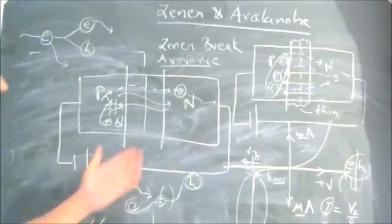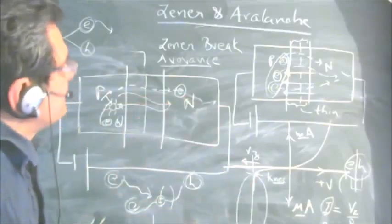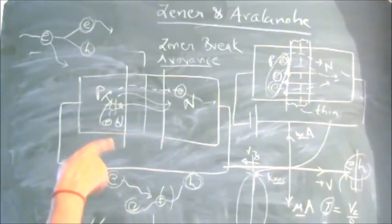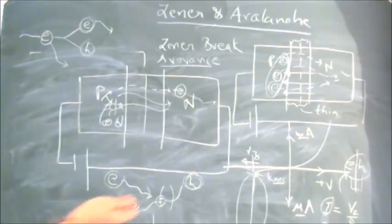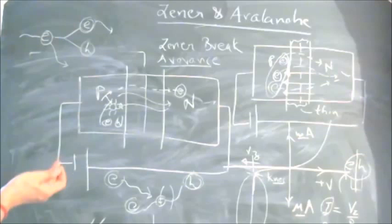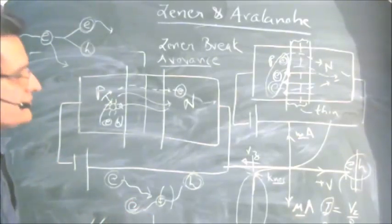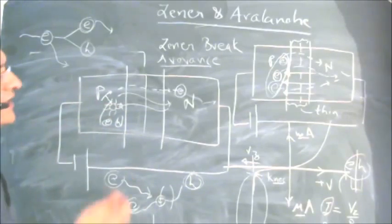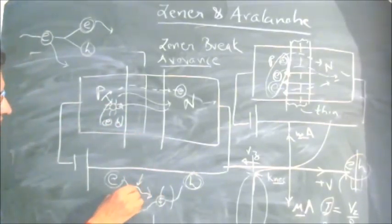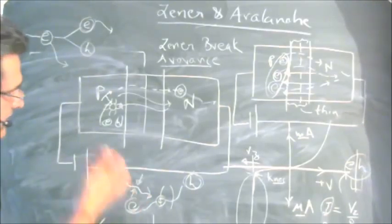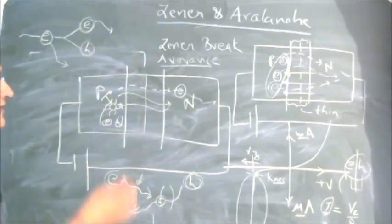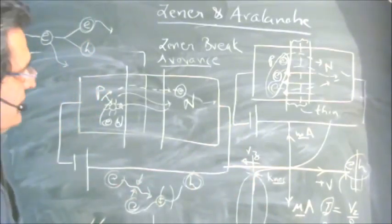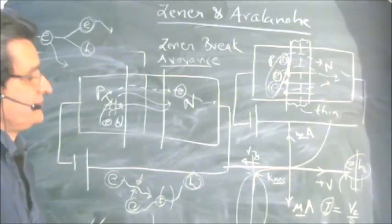There is one more difference between zener and avalanche breakdown: the effect of temperature. In zener breakdown, when temperature rises, current also rises because more E-H pairs become available to cross over. But in avalanche breakdown, when temperature rises, crystal vibrations reduce the energy of impacting electrons, adversely affecting the avalanche effect. That is all about these two types of breakdowns.